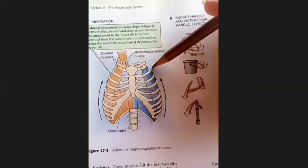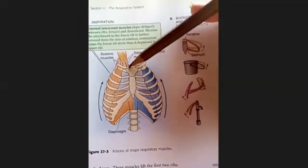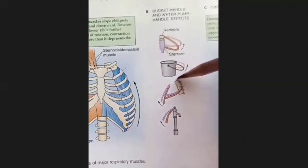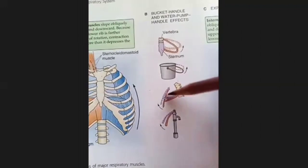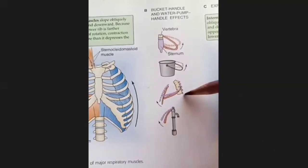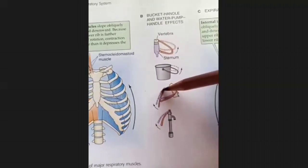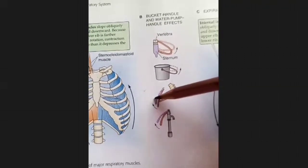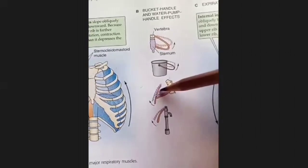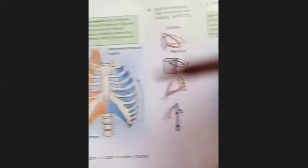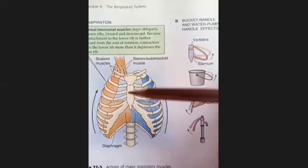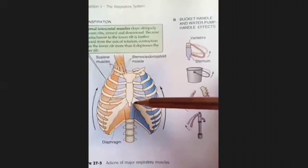When the ribs move and the sternocleidomastoid contracts, the sternum will also rise. Just like — imagine this is the backbone and this is the sternum shown in front. When the ribs rise, the sternum will move upward and forward, just like the handle of a water pump — this is called the pump handle movement. This increases the antero-posterior diameter of the chest.